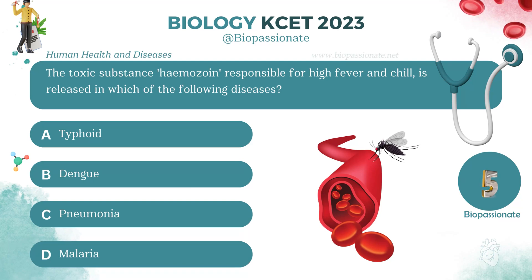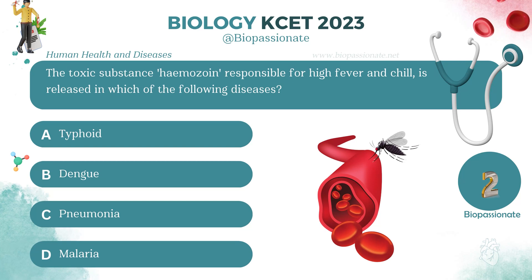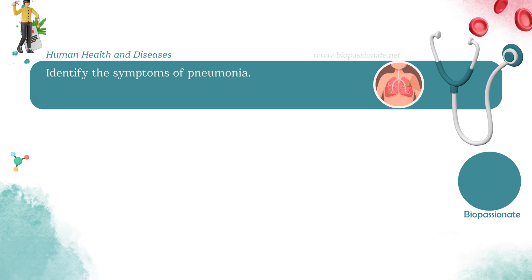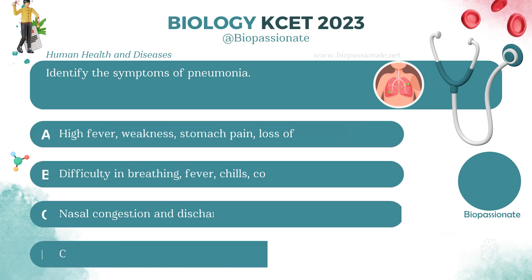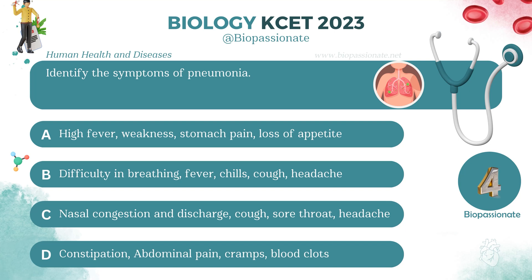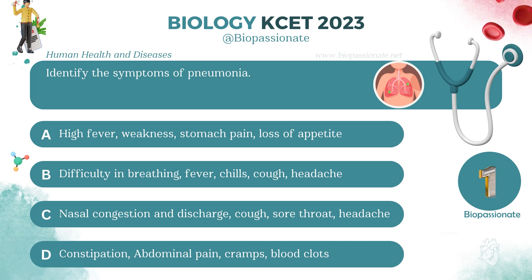The toxic substance hemozoin, responsible for high fever and chill, is released in which of the following diseases? Answer: Malaria.